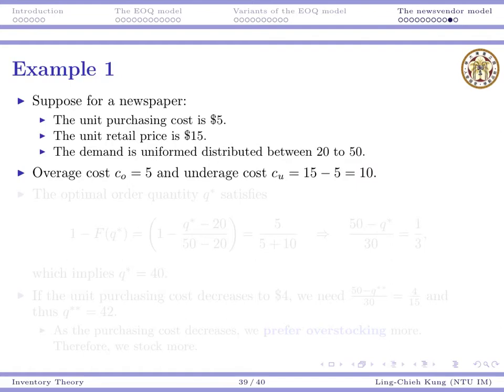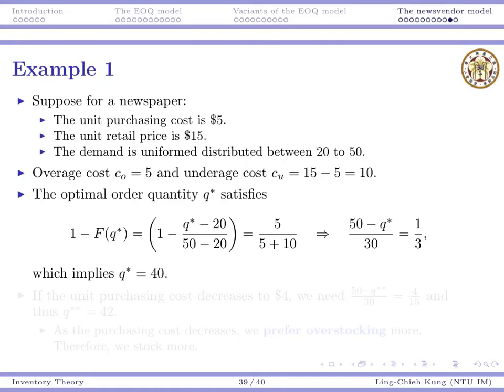So if we can order one unit less, we will earn $5. For underage, the sales margin is $10. So when we have a shortage, if we can order one unit more, we can earn $10. That's our underage cost. When we talk about optimal order quantities, all we need to do is to plug in Q star into this expression and try to make it equal to this.